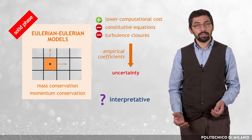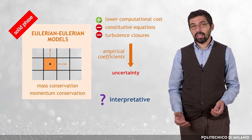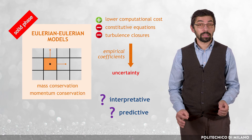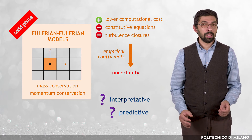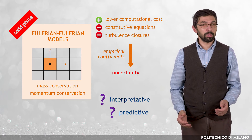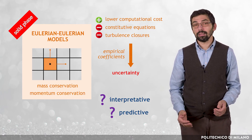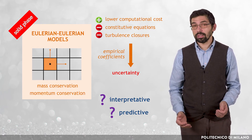However, very few Eulerian-Eulerian models have shown predictive value — that is, proven reliability outside the calibration conditions. Apart from that, another common drawback of existing Eulerian-Eulerian models for slurry flows is that their applicability conditions are often unclear.